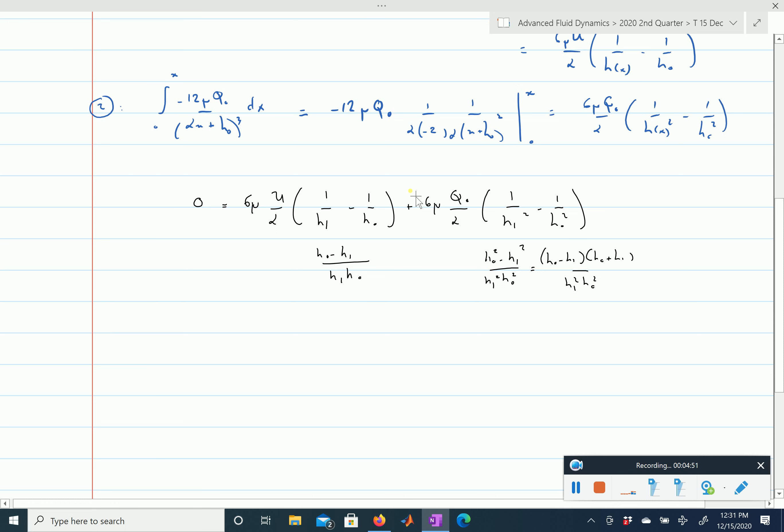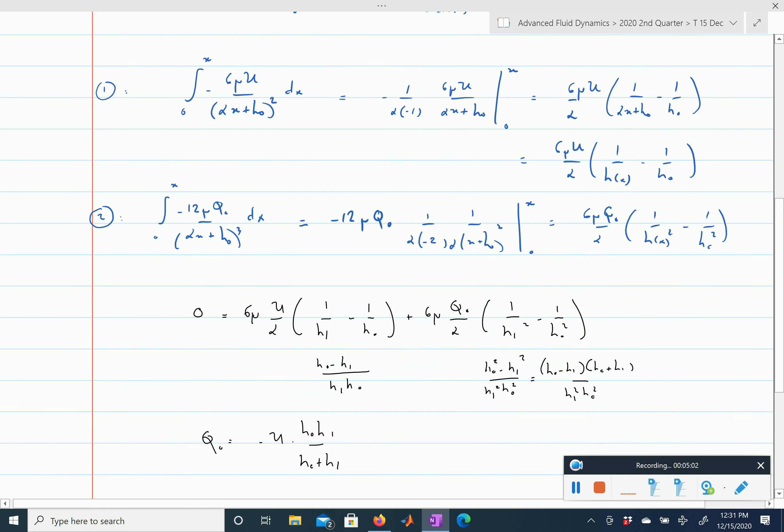So when you want to know what q0 is, q0 is going to be equal to minus u times h1 h0 divided by h1 plus h0, that's what you find here.